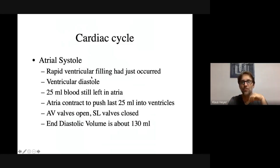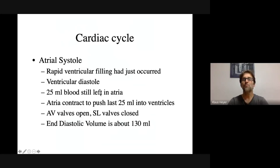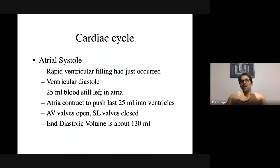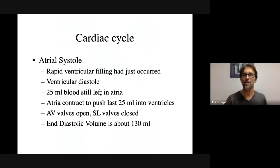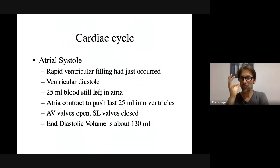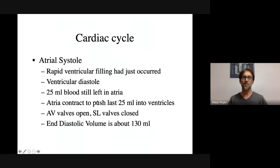The ventricle is in diastole — still relaxed. Nothing's contracted yet, and there's still some blood left in the atrium. The AV valve opened, blood dropped into the ventricle, but there's still some blood remaining in the atrium — it didn't all fall in. That's why we have atrial systole, or atrial contraction: the atria contract to push the rest of that blood into the ventricles. We want all that blood in the ventricles.